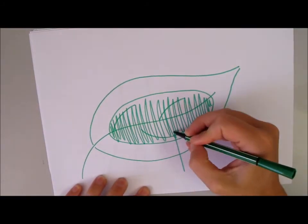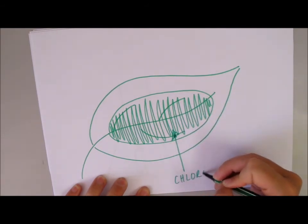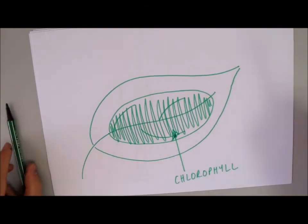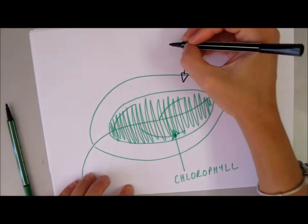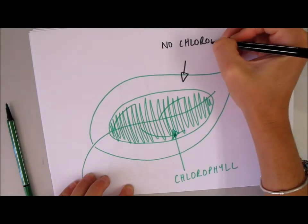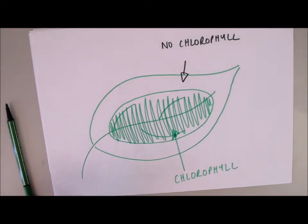Because in this area there is chlorophyll present, whereas in this area there is no chlorophyll present. So, we should therefore be able to see how chlorophyll affects photosynthesis.